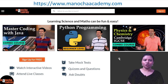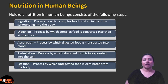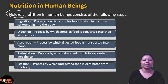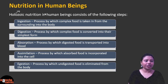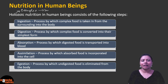Let us go straight into the lesson for today. Today's lesson starts with the concept of nutrition in human beings. As we discussed in the last class, in human beings the type of nutrition is known as holozoic nutrition. Holozoic nutrition is a process by which we take complex food as a whole and then we break it down.